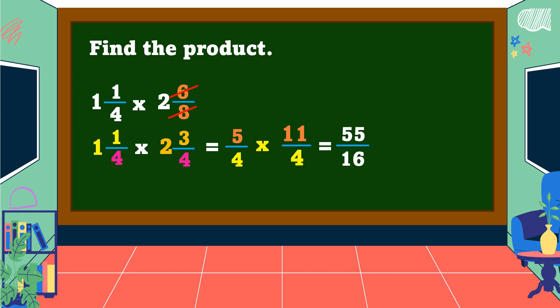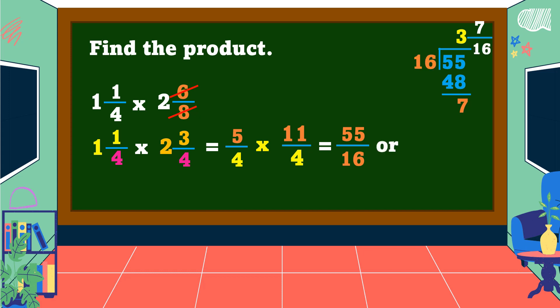The result 55/16 is an improper fraction. To change it to a mixed number, divide the numerator by the denominator: 55 divided by 16 is 3, and 3 times 16 is 48; 55 minus 48 is 7. We take 7 as our numerator and 16 as our denominator. Therefore, 55/16 equals 3 and 7/16.